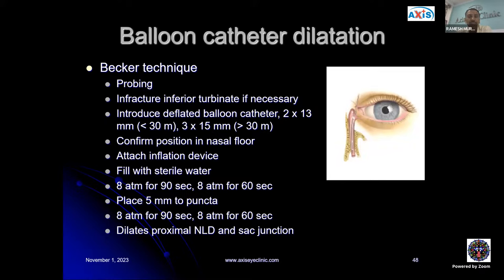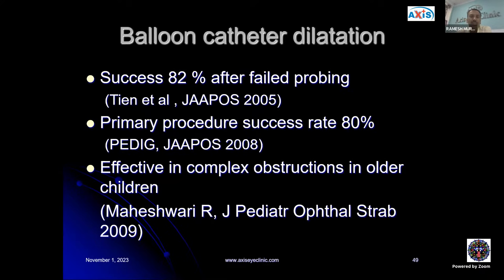Balloon catheter dilatation dilates the region of the valve of Rosenmuller or the valve of Hasner using an inflated balloon filled with sterile water. In the Becker technique: probing first, infracture of the inferior turbinate if necessary, introduction of a deflated balloon catheter confirmed by endoscopy on the nasal floor, then inflation at about 8 atmospheres for 60–90 seconds. This helps dilate the nasolacrimal duct and sac junction. Success is about 82% after failed probing and 80% as a primary procedure; effective in complex obstructions in older children.